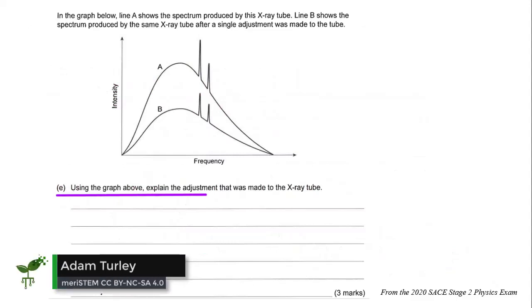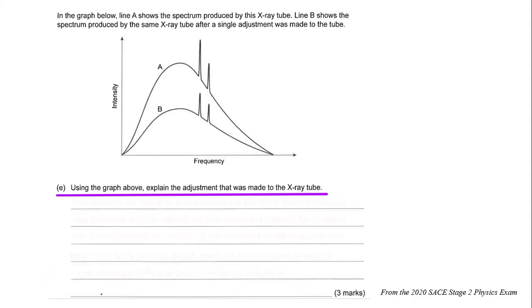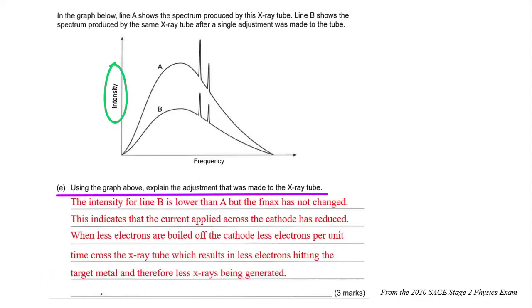Ok, using the graph above, explain the adjustment that was made to the X-ray tube. The intensity for line B is lower than A, but the Fmax has not changed.